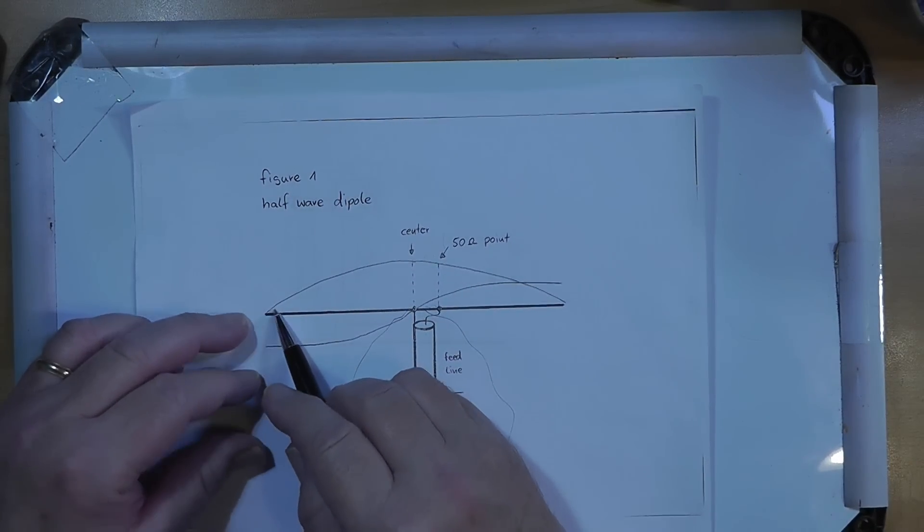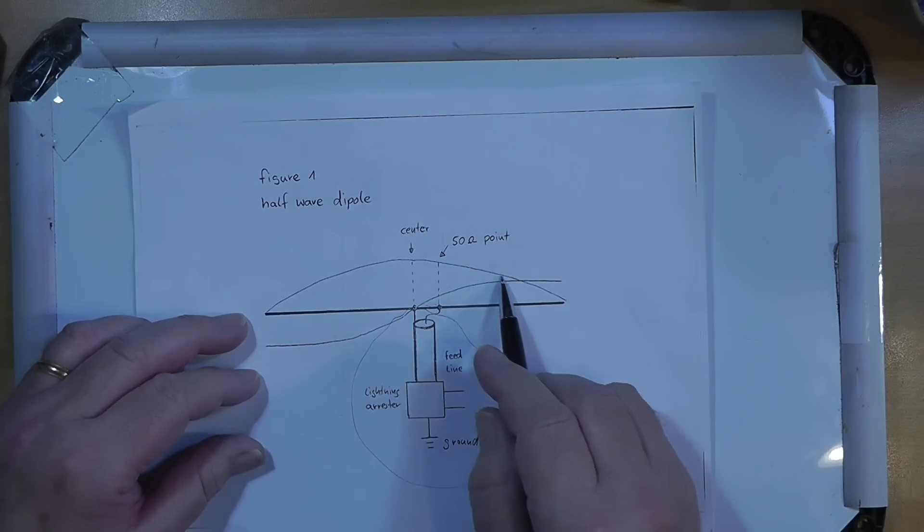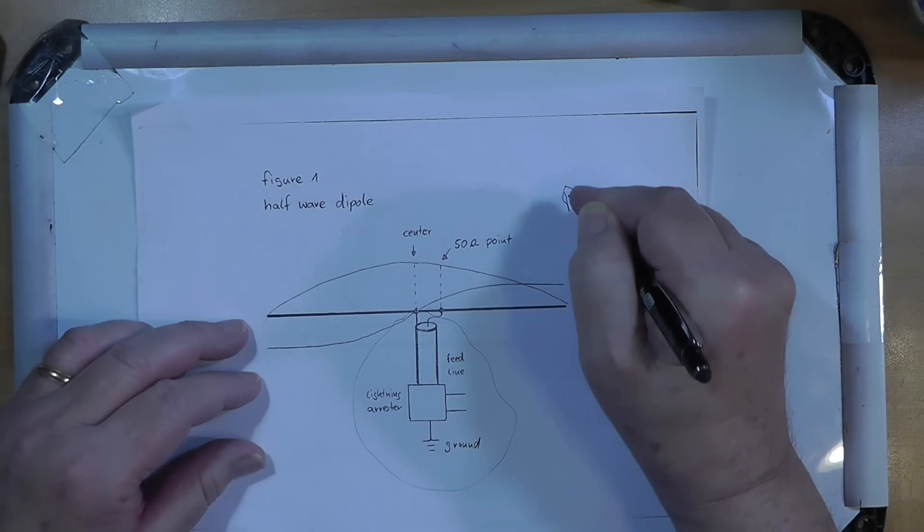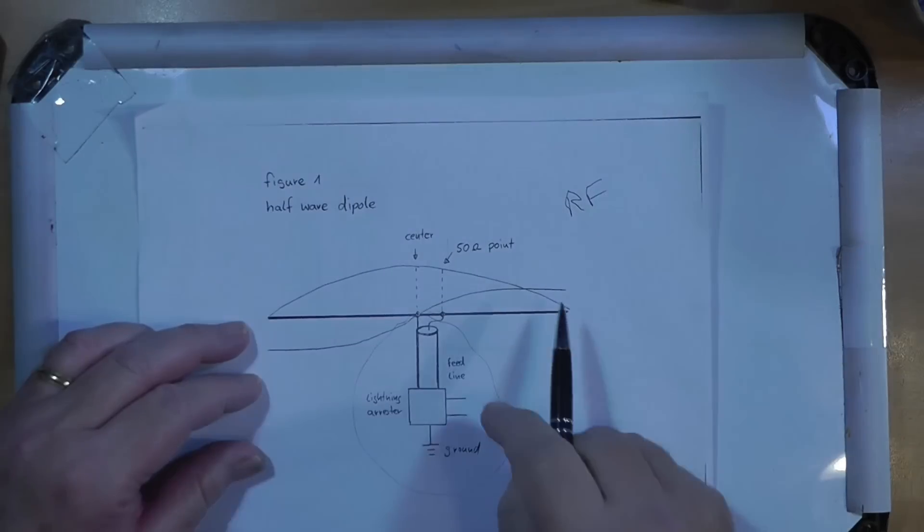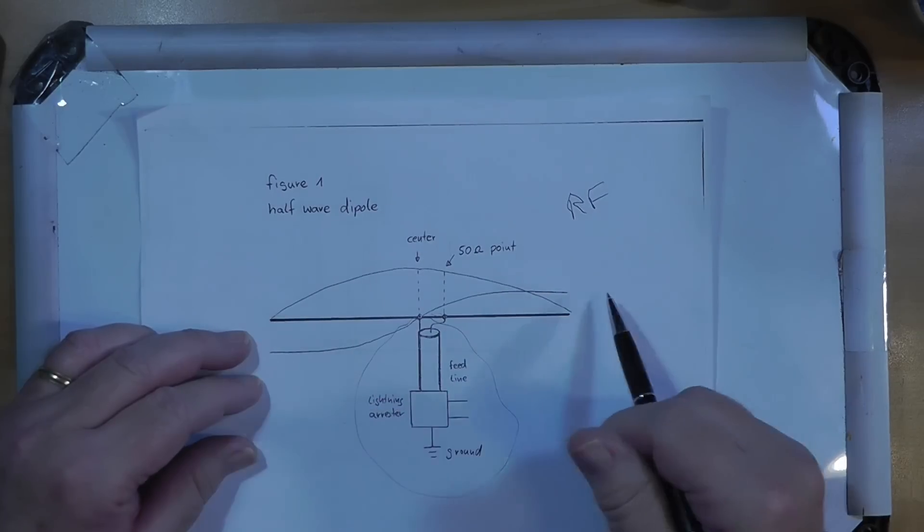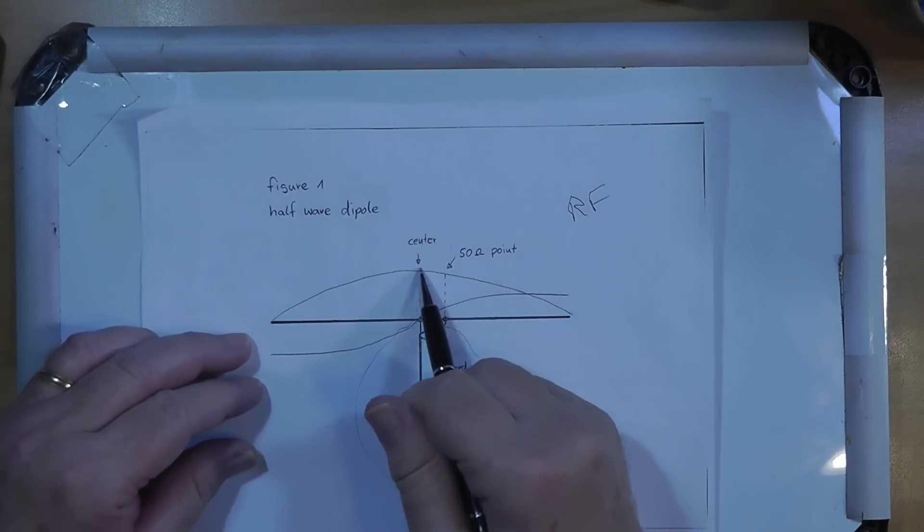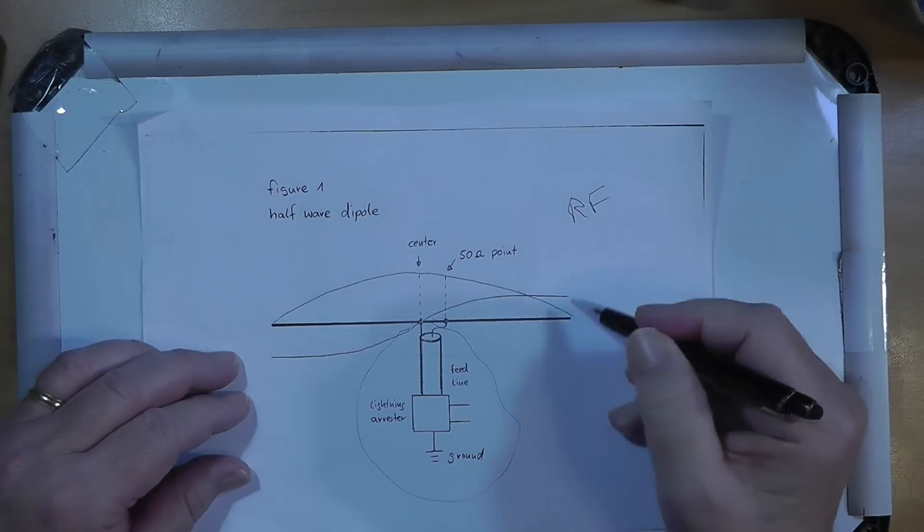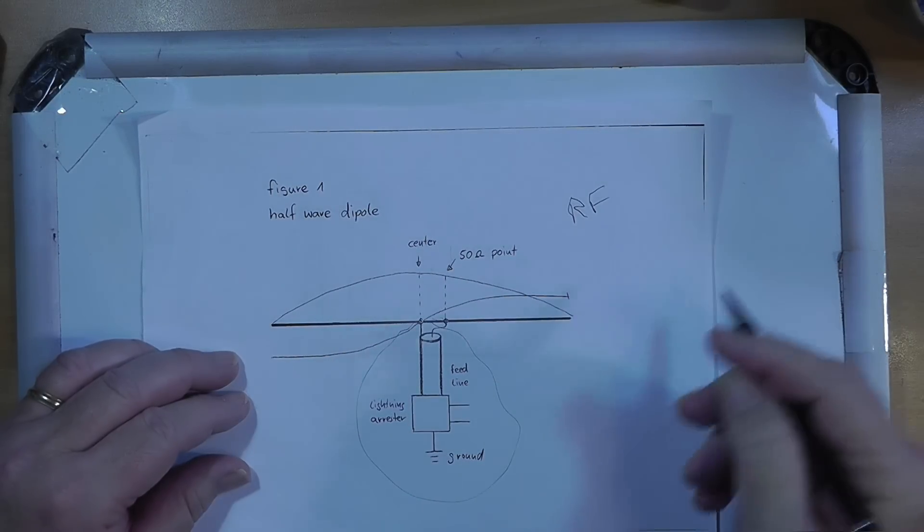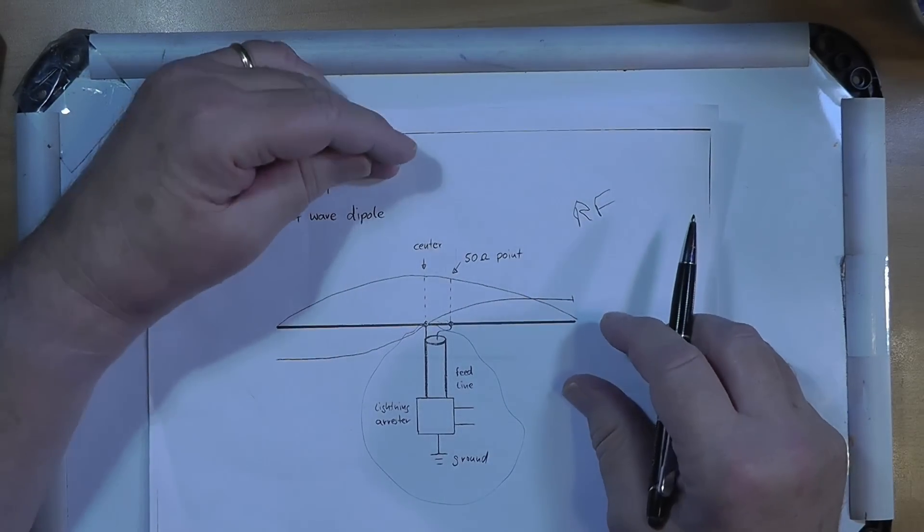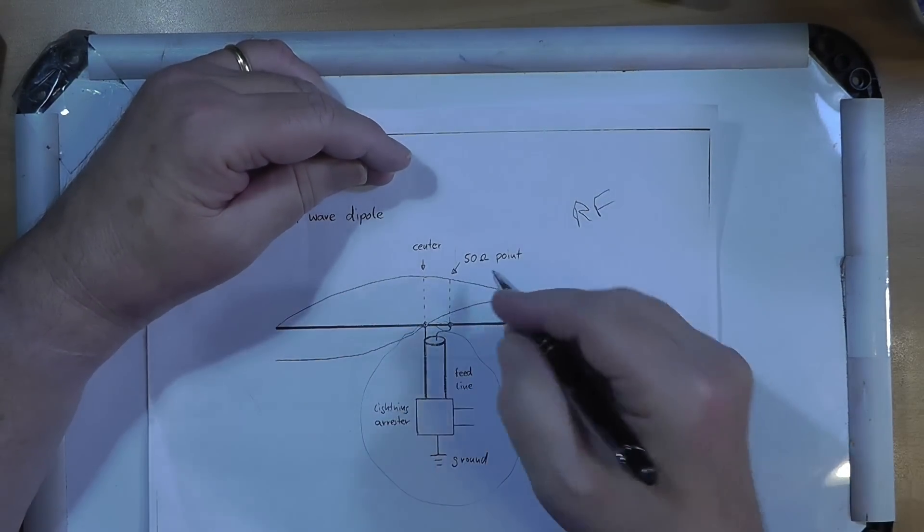But what I want to look at is this idea. This is the current, and this is RF current. So if you're measuring with an RF probe, you will find the current to be least at the ends and most at the center. And you will find the voltage to be highest at the ends and lowest at the center. Now there's a problem here. This is the current, and this is the voltage.